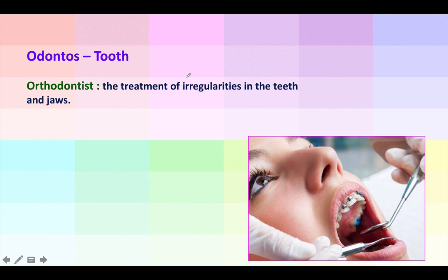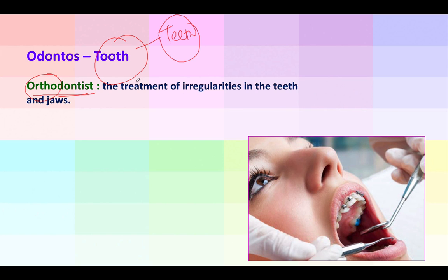'Odontos' means tooth. A doctor who treats diseases related to the tooth is a dentist — tooth is singular, teeth is plural. Who is an orthodontist? 'Ortho' means straight, so an orthodontist treats irregular teeth and tries to straighten them using wires. An orthodontist is basically a dentist who specializes in the irregularities of the teeth and jaws.